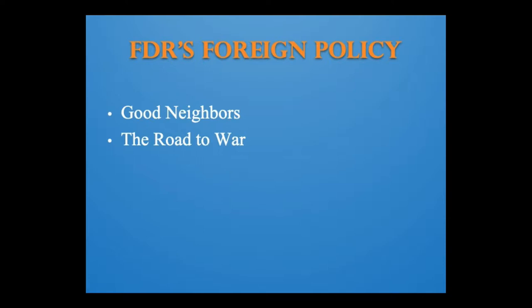In Europe, Hitler, after consolidating his rule within Germany, launched a campaign to dominate the continent. He violated the Versailles Treaty by pursuing massive rearmament and in 1936 by sending troops into the Rhineland, a demilitarized zone between France and Germany. The failure of Britain, France, and the United States to oppose Hitler's aggression convinced him that these democracies would not resist. Benito Mussolini, the father of fascism in Italy, invaded and conquered Ethiopia.